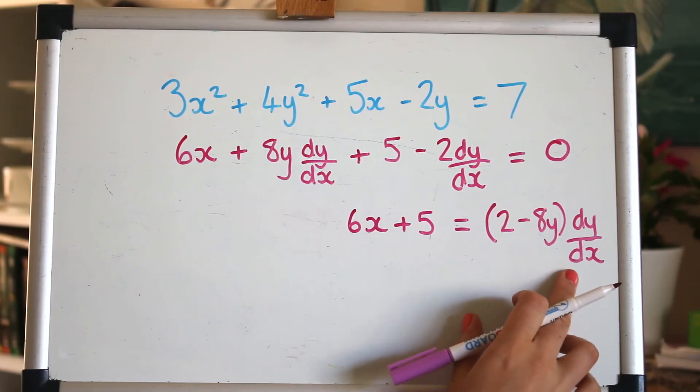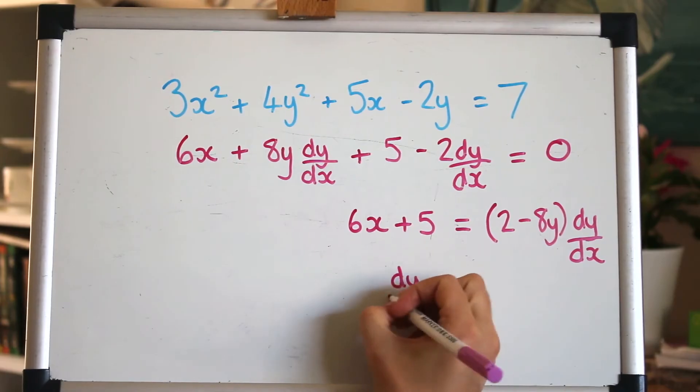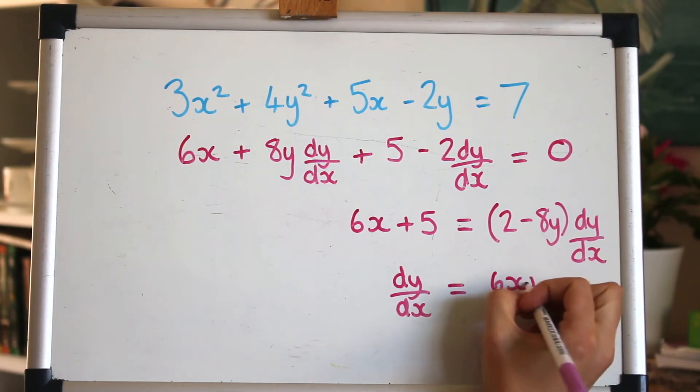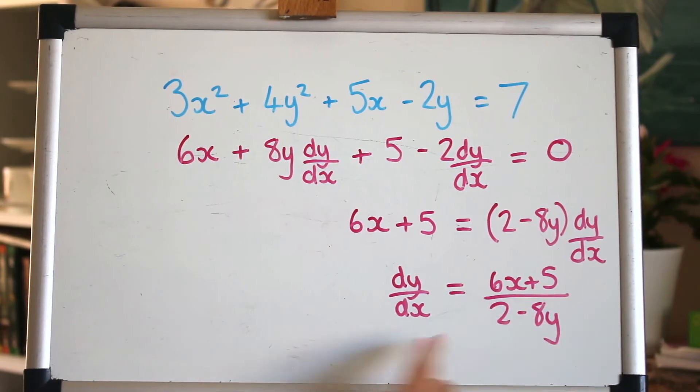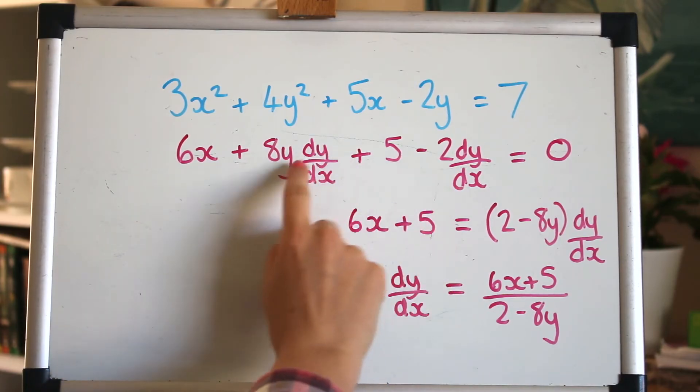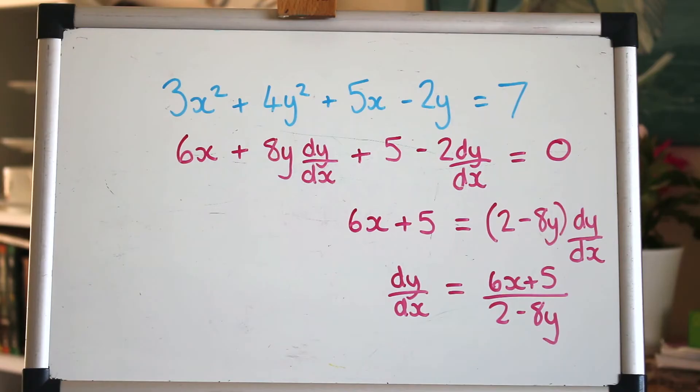And now to make dy by dx the subject I'm just going to divide by that and I'll put the dy by dx back over here like we're used to seeing. Just swap the sides around so we'll have that divided by 2 minus 8y and that's it, that's your expression for the gradient function of that circle. I hope that doesn't feel too difficult. It's just a case really of remembering the dy by dx whenever you've got a y term and then practicing making dy by dx the subject at the end. Let's do a second example now.